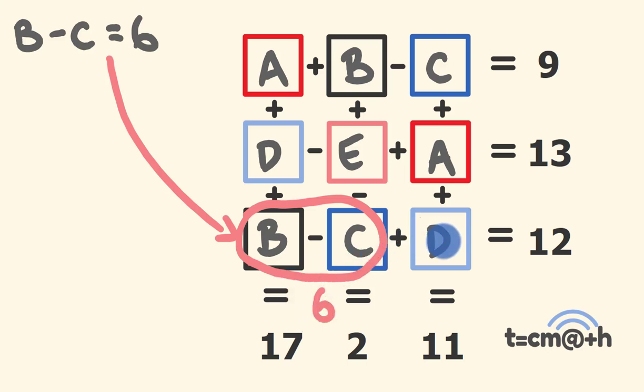6 plus what number equals 12. So we've worked out D right away. So we know that D has to equal 6, because 6 plus 6 is equal to 12.